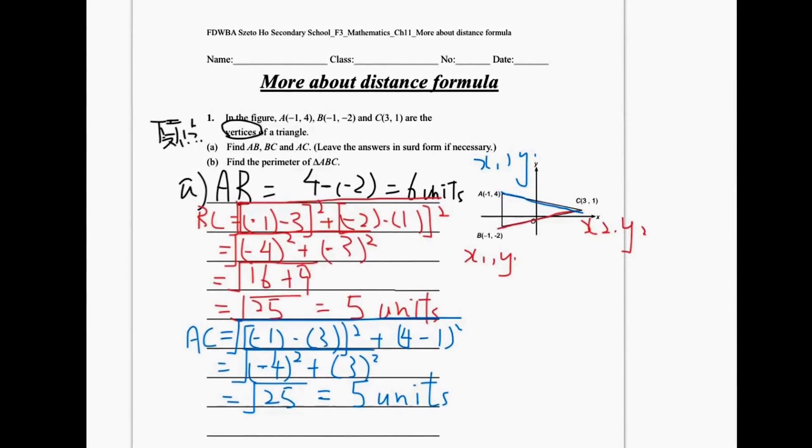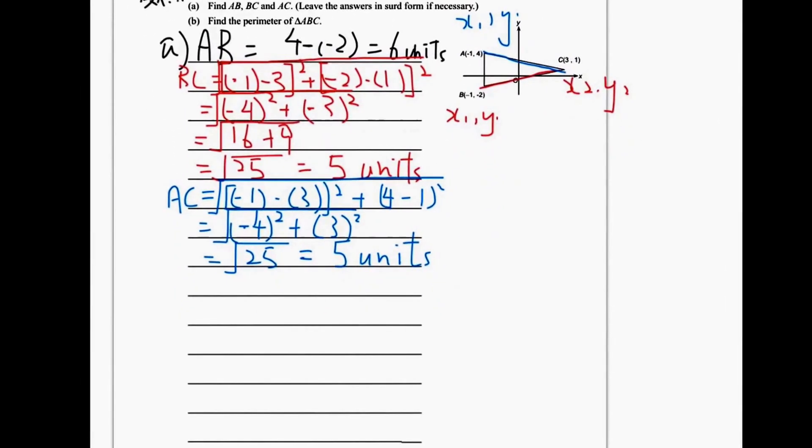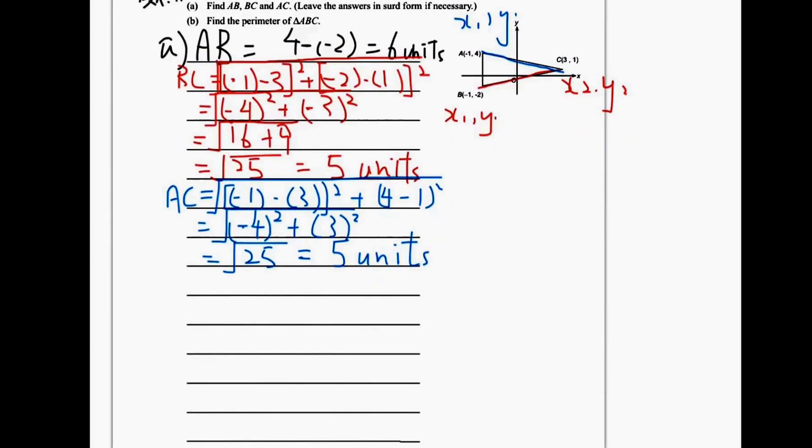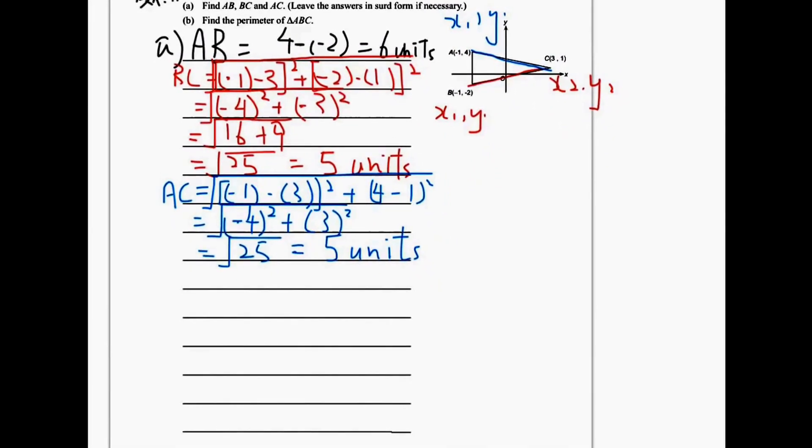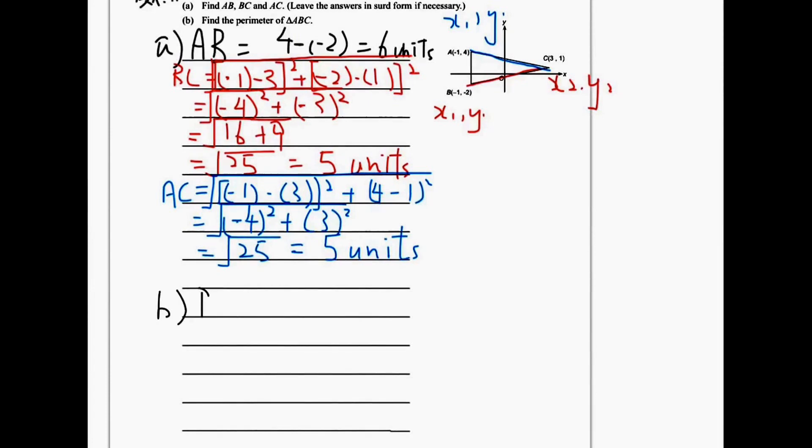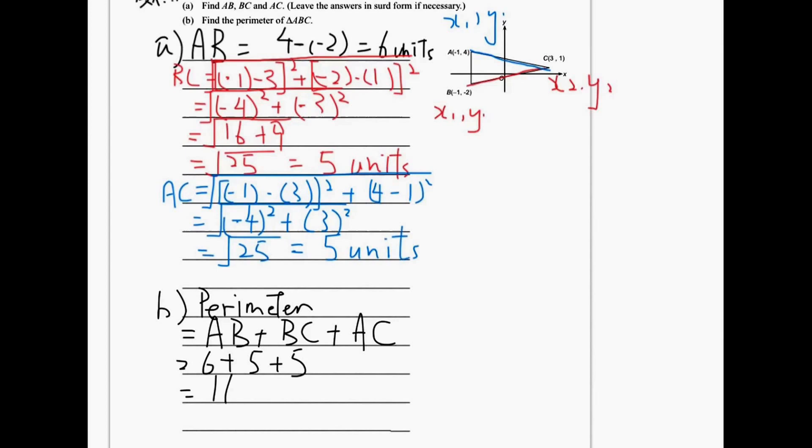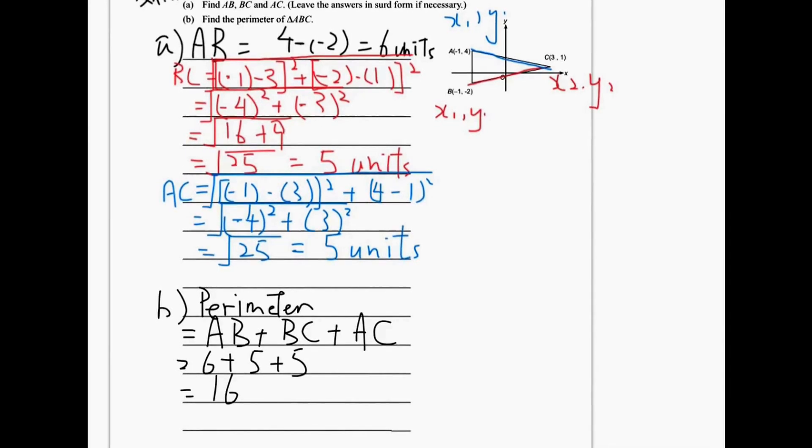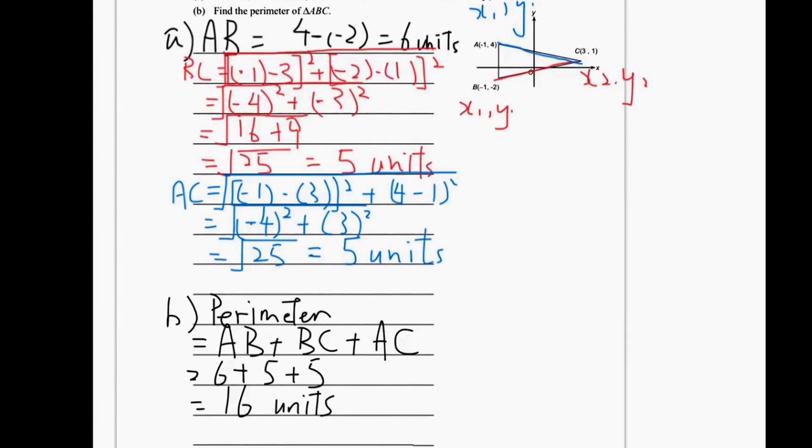Let's go to part B. Find the perimeter of triangle ABC. The perimeter is just simply the length of AB plus BC plus AC. So it is equal to 6 plus 5 plus 5, and then it is equal to 16 units. And of course, don't forget units.